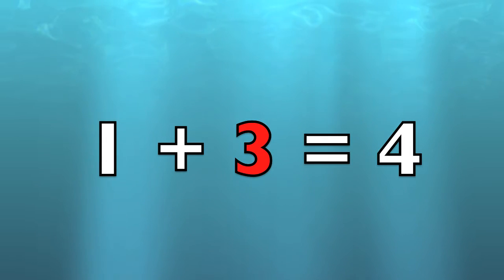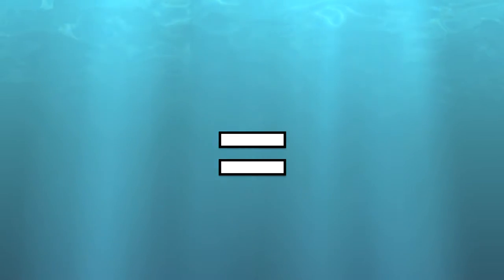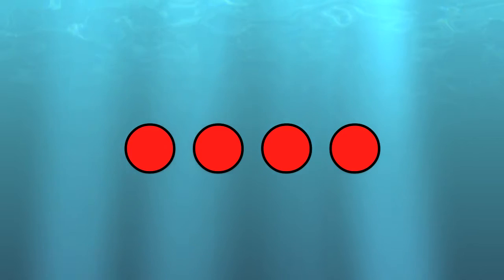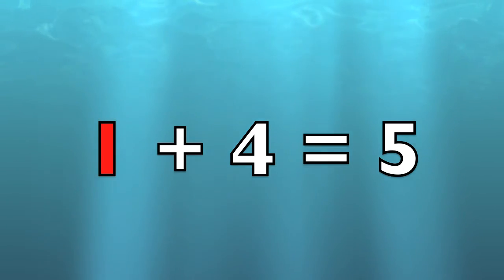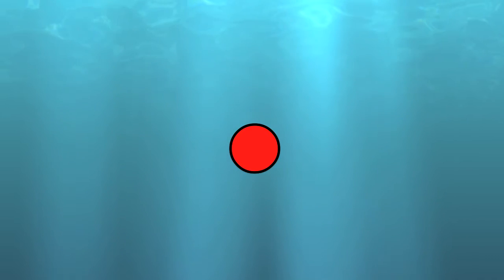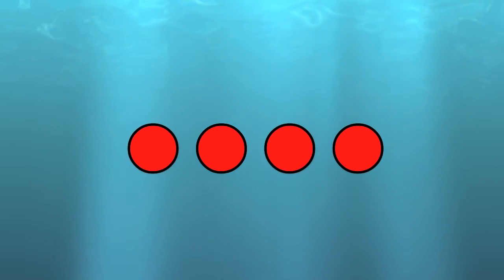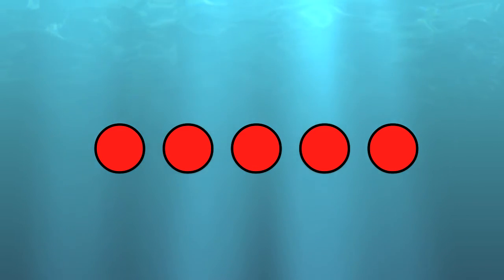One plus three equals four. One circle plus three circles equals four circles. One plus four equals five. One circle plus four circles equals five circles.